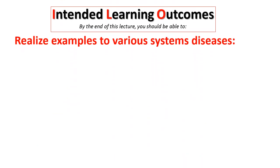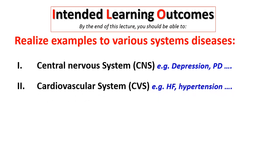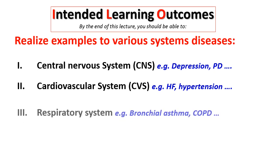The ILOs. By the end of this lesson, we should be able to recognize examples of various system diseases. Number one: central nervous system models, for example, model of depression, Parkinson's disease, and so on. Number two: cardiovascular system models, like model of hypertension, heart failure, and so on.